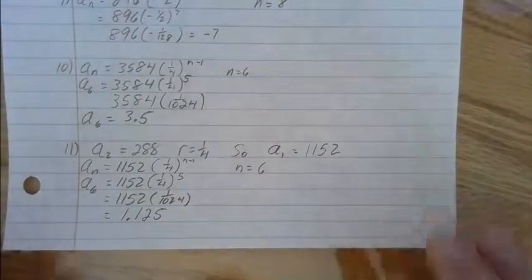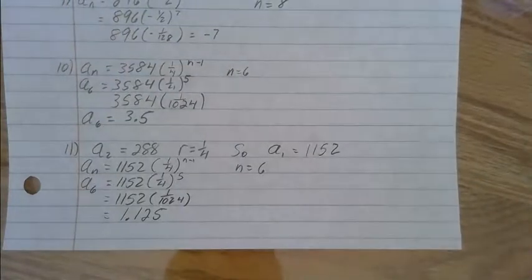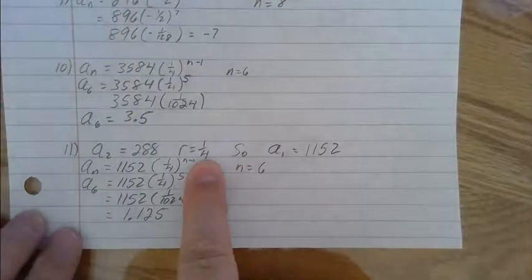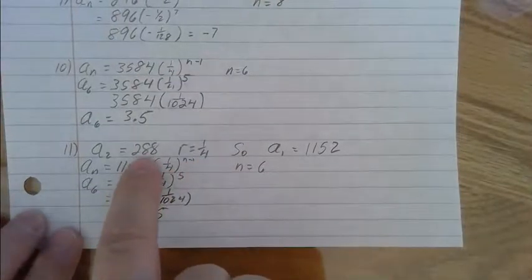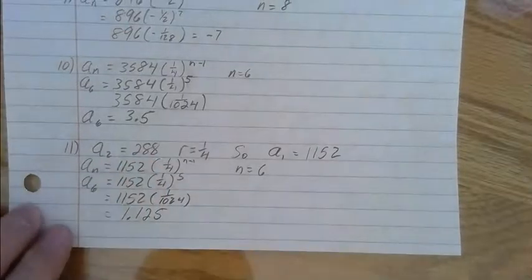Number 11: you had to figure out what a sub 1 is. So if our common ratio is 1/4, you had to multiply a sub 2 by 4 to figure out what that first term is.